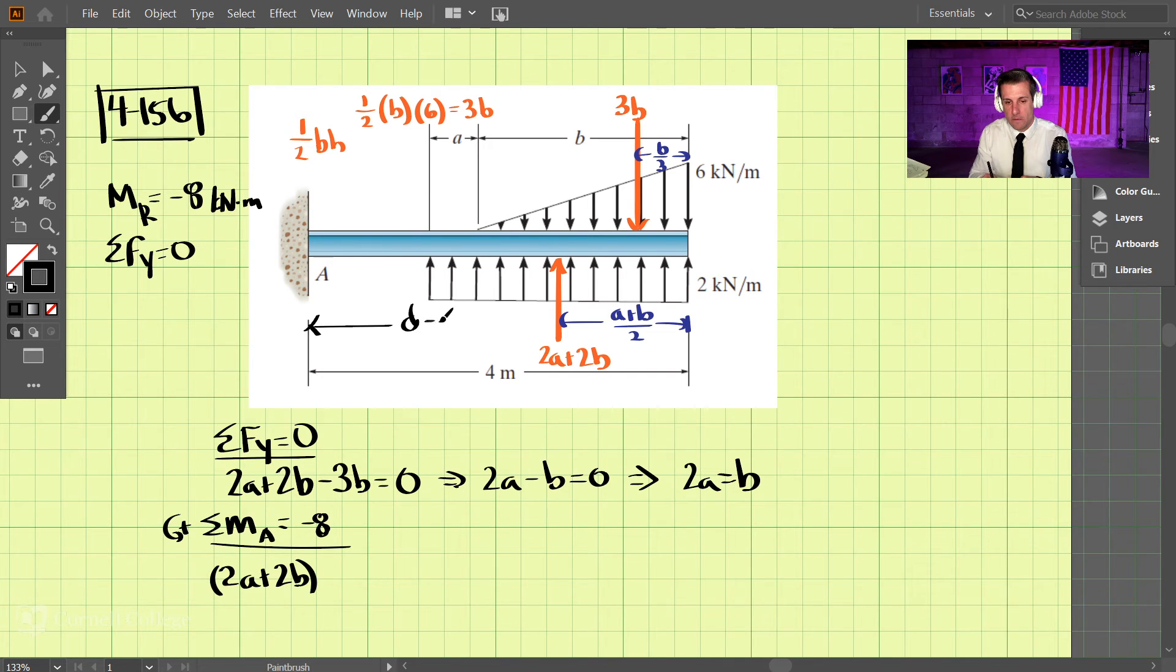If this total distance is 4 meters, we have 4 minus (a + b) over 2. So we take (2a + 2b) times [4 - (a + b)/2].